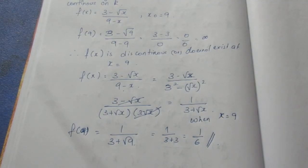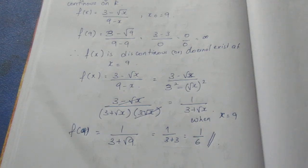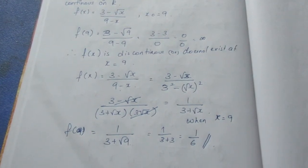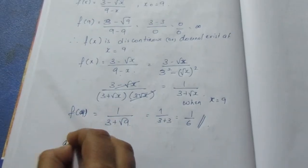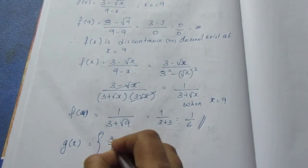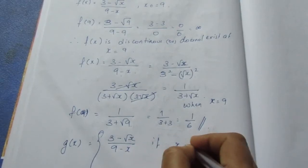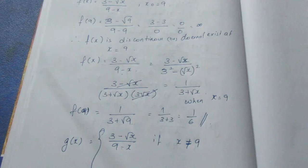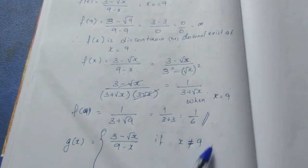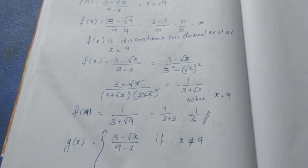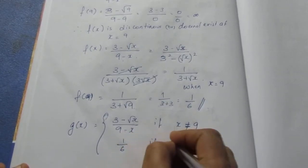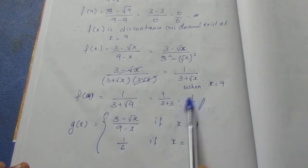So we define the continuous function g of x as follows: g of x equals f of x, which is (3 minus root x) by (9 minus x) if x is not equal to 9; and g of x equals 1 by 6 if x is equal to 9. This solves the problem — the answer is 1 by 6.